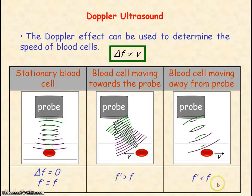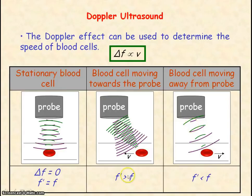It's important to note that there are in fact two Doppler shifts occurring — one for the incident wave and one for the reflected wave. The larger the change in frequency, the greater the speed of the blood cells.